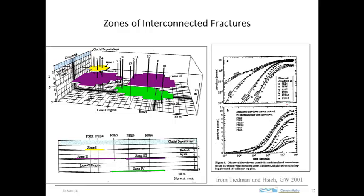One thing to keep in mind is that these fracture systems are typically regarded as forming interconnected networks of finite size. This shows an interconnected zone of fractures — in purple — that is intersected by wells. The other colored zones are also interconnected fracture zones of finite size that aren't connected to each other. These are the hydrologic flow units typically recognized in fractured crystalline rock.